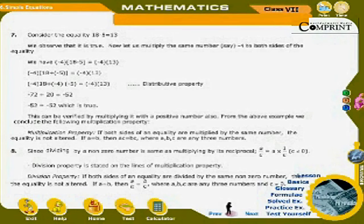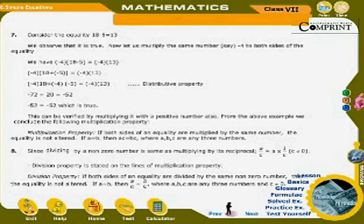8. Since dividing by a non-zero number is the same as multiplying by its reciprocal — a ÷ c = a × (1/c), where c ≠ 0 — the Division property is stated on the lines of the multiplication property: if both sides of an equality are divided by the same non-zero number, the equality is not altered. If a = b, then a ÷ c = b ÷ c, where a, b, c are any three numbers and c ≠ 0.